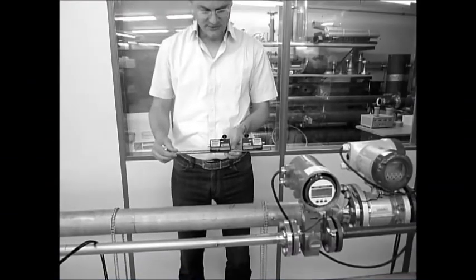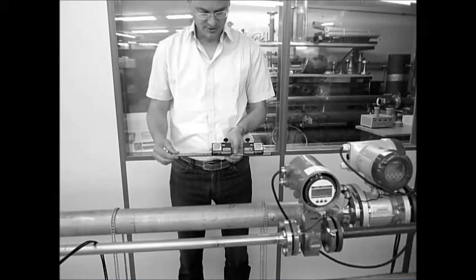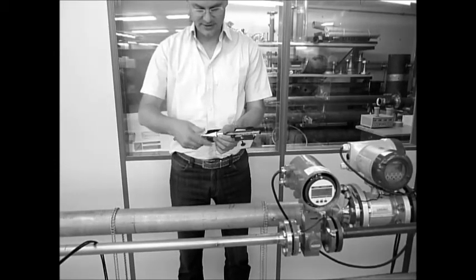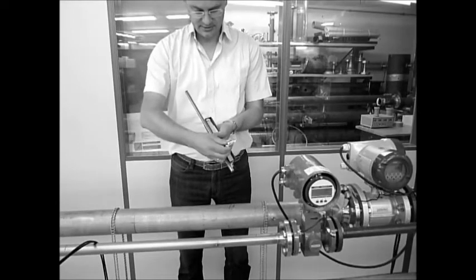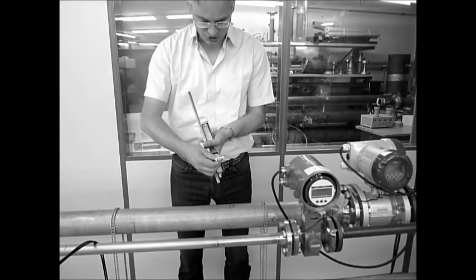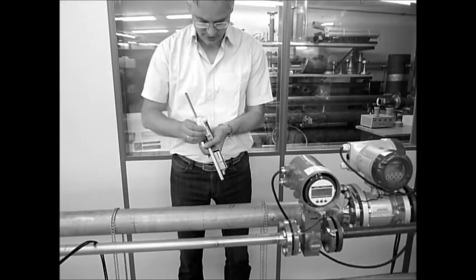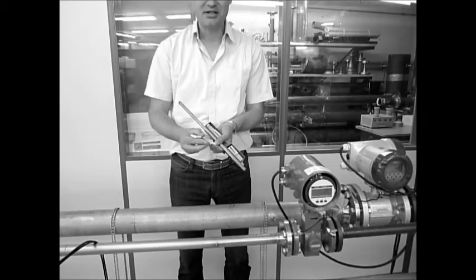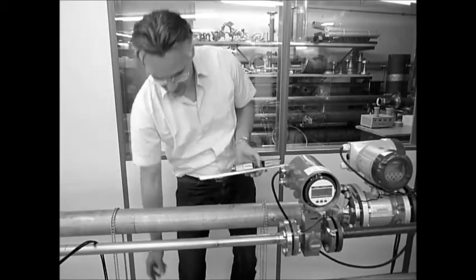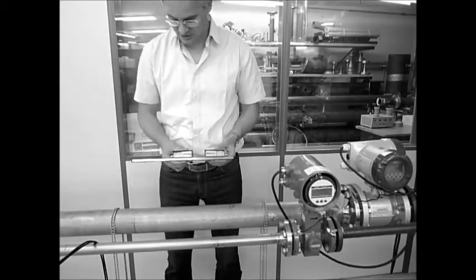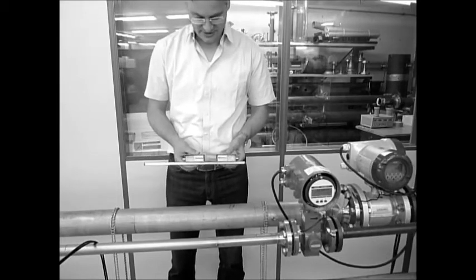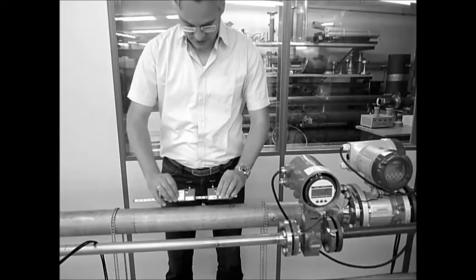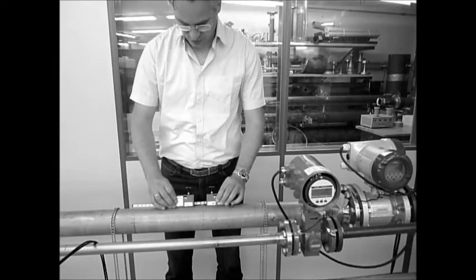Now we have to mount the transducers on the pipe. I'm using a little bit of the coupling compound - just use very little in the middle of the transducer, a line of two or three centimeters. Very little compound is good enough to give the acoustic coupling to the pipe. The transducers with the two screws can be very easily placed on the pipe.